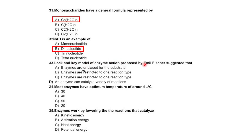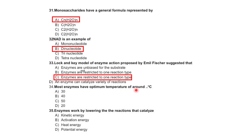The lock and key model of enzyme action proposed by Emil Fischer suggested that enzymes are specific for the substrate, enzymes are not restricted to one reaction type, enzymes are restricted to one reaction type, or an enzyme can catalyze a variety of reactions. Most enzymes have an optimum temperature around 37 degrees centigrade. Enzymes work by lowering the activation energy.